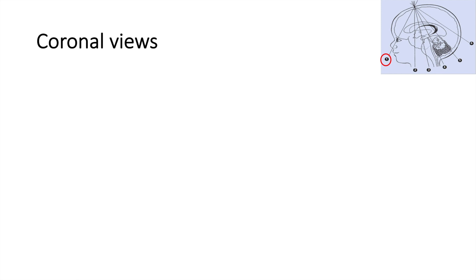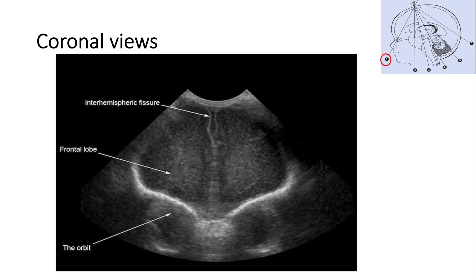Now we're going to move to the coronal view. We're going to see the frontal lobe — this is the right side and this is the left side — and this is the interhemispheric fissure.